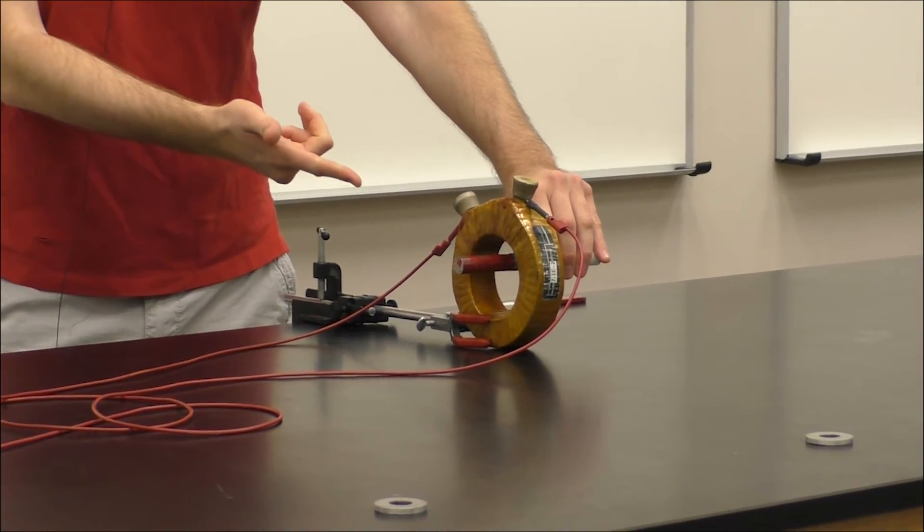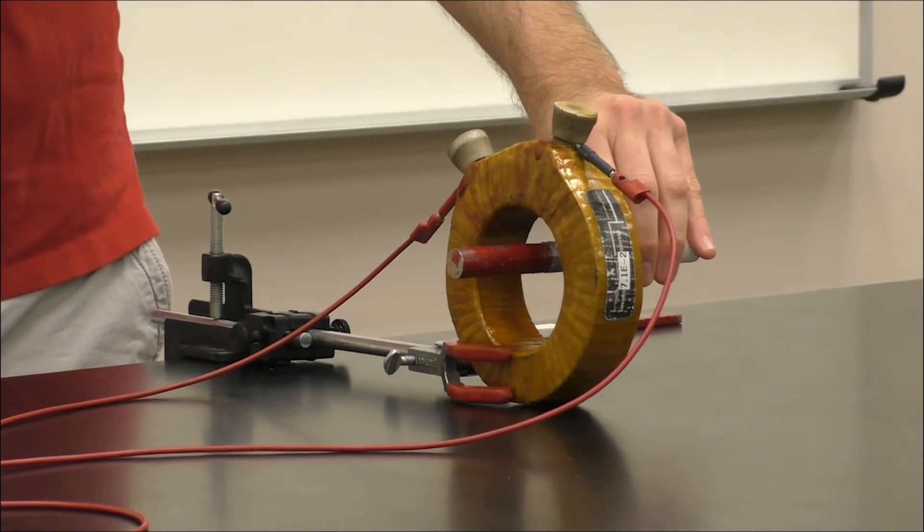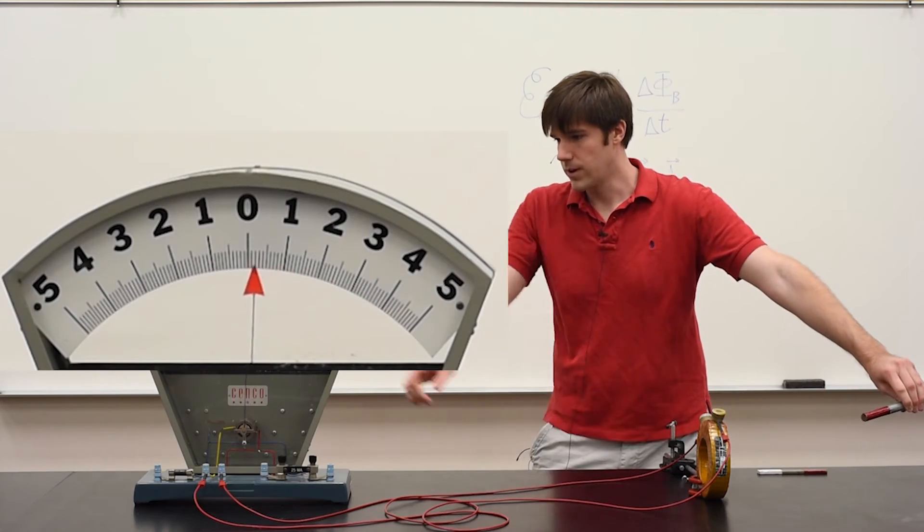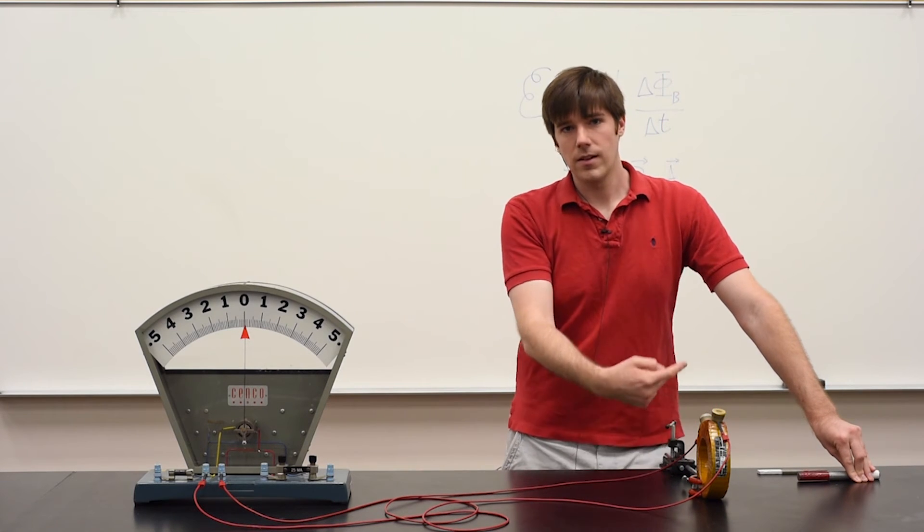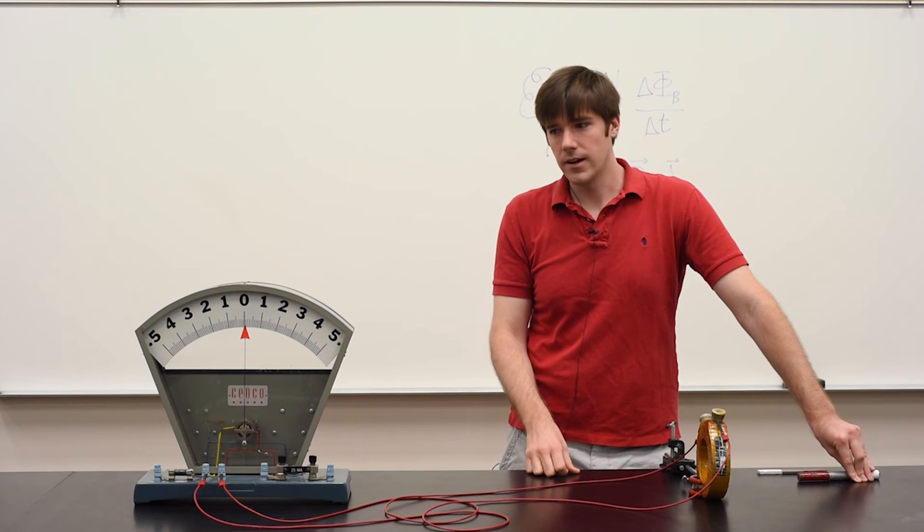But now when I remove the bar magnet through the coils the opposite way, the reading on the galvanometer goes in the opposite direction. So it's setting up a voltage to oppose the change in magnetic flux.